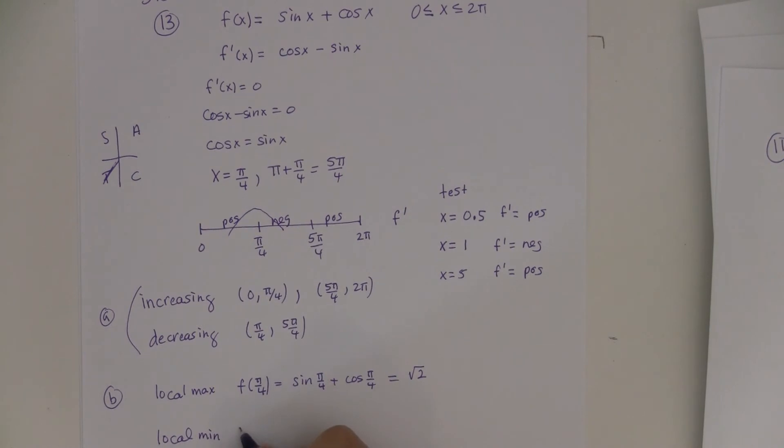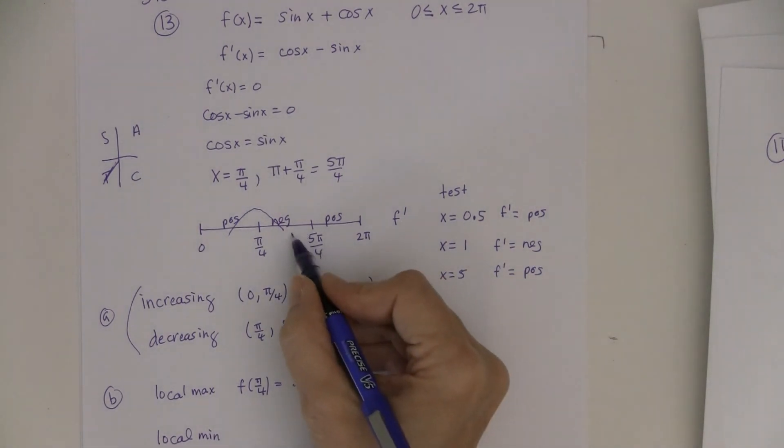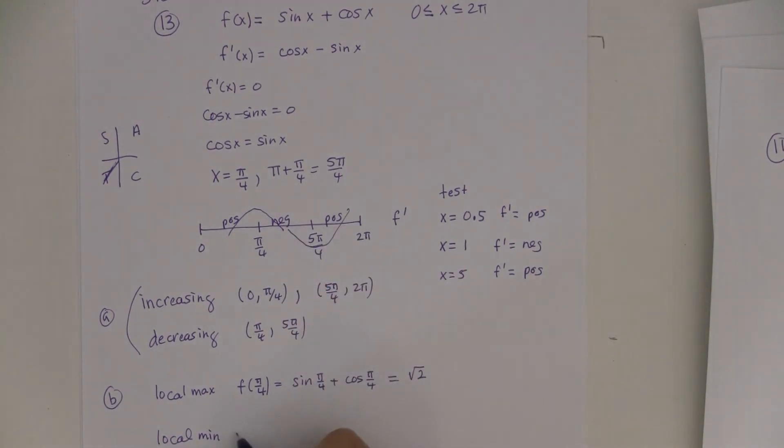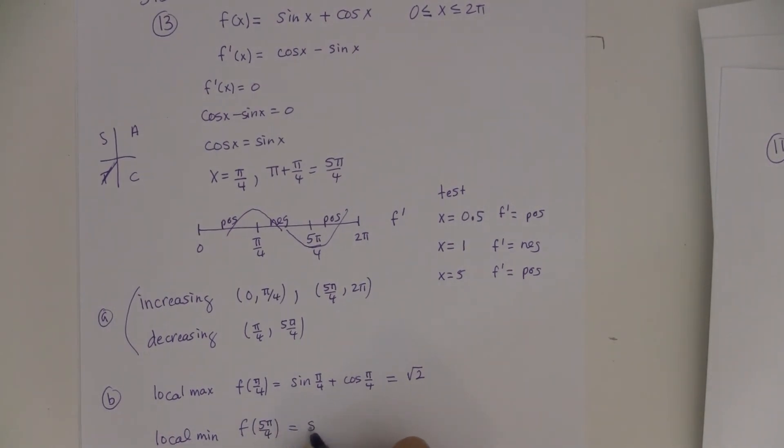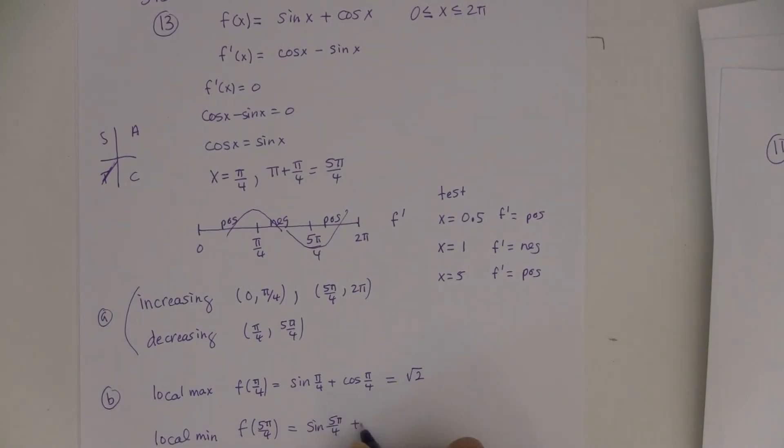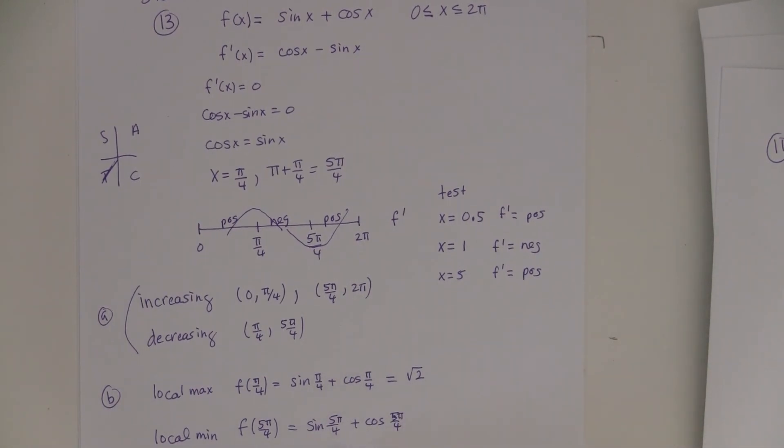And then the local min, because this is going negative and then back up, is at 5 pi over 4. So this is sine of 5 pi over 4 plus cosine of 5 pi over 4. And let me think about that for a second.